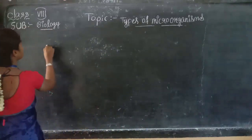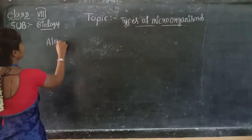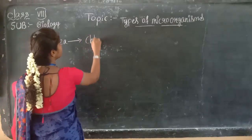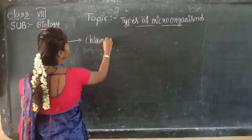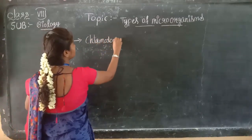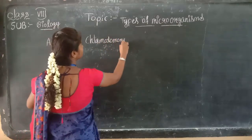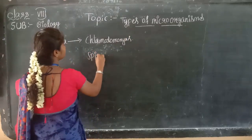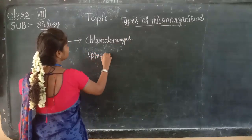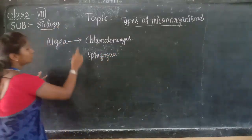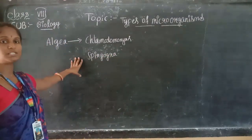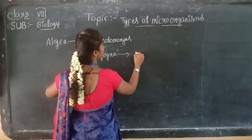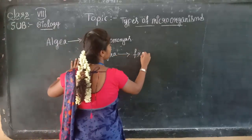What are the examples for algae? Examples for algae are Chlamydomonas and Spirogyra. We already discussed about the Chlamydomonas and Spirogyra. The Spirogyra reproduces at the reproductive stage by the help of fragmentation.